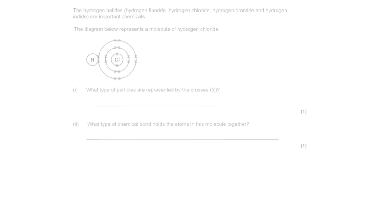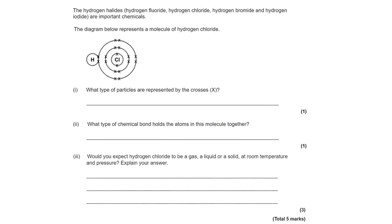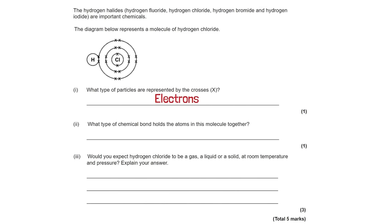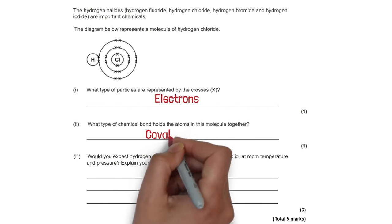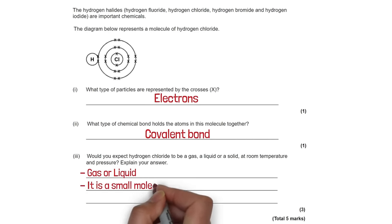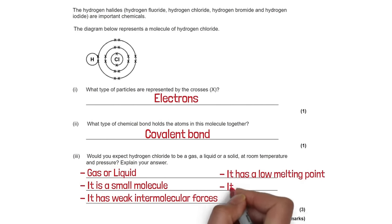A diagram of hydrogen chloride is shown. The crosses located outside the nucleus represent the electrons. The bond holding the atoms together is a covalent bond, because they are sharing electrons. Hydrogen chloride is a gas or liquid at room temperature because it is a small molecule with weak intermolecular forces, giving it a low melting point and boiling point.